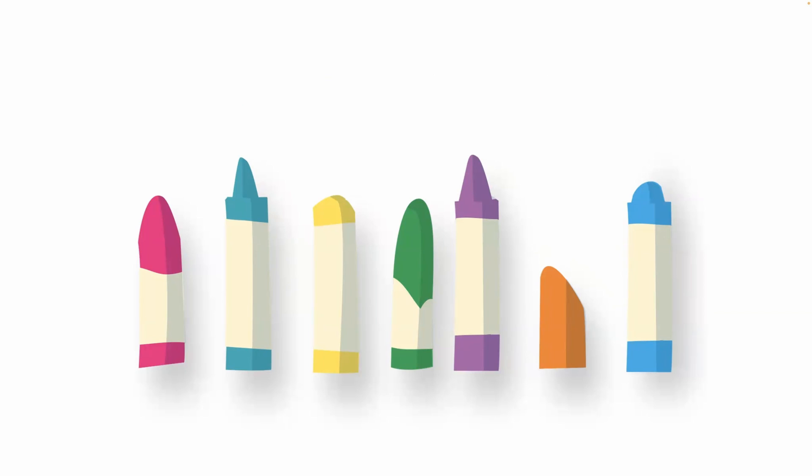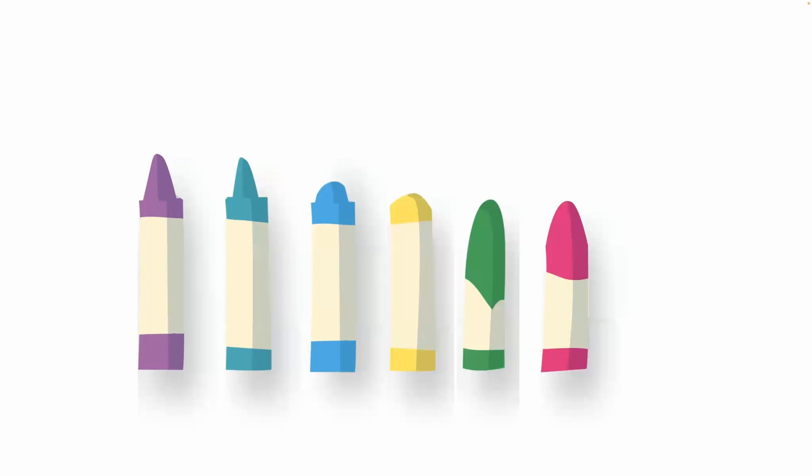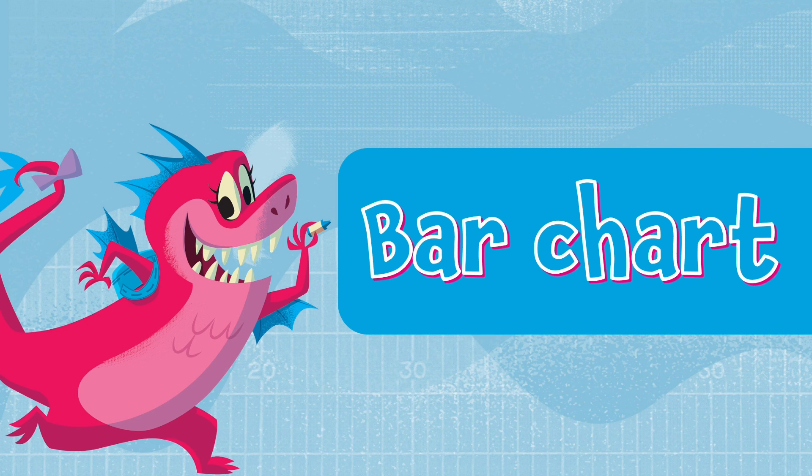Even with seven crayons, it's easy to make comparisons. The teal and purple crayons are the tallest. The orange crayon is the smallest. We must use that one a lot. I can order the crayons from tallest to smallest. Looking at them is just like reading a graph known as a bar chart.